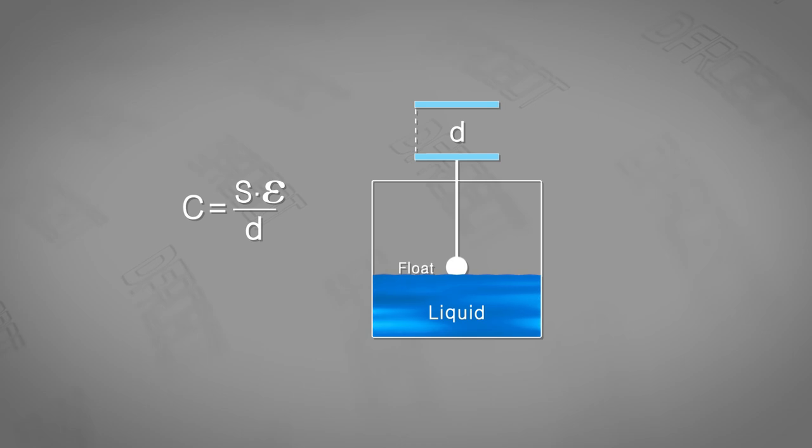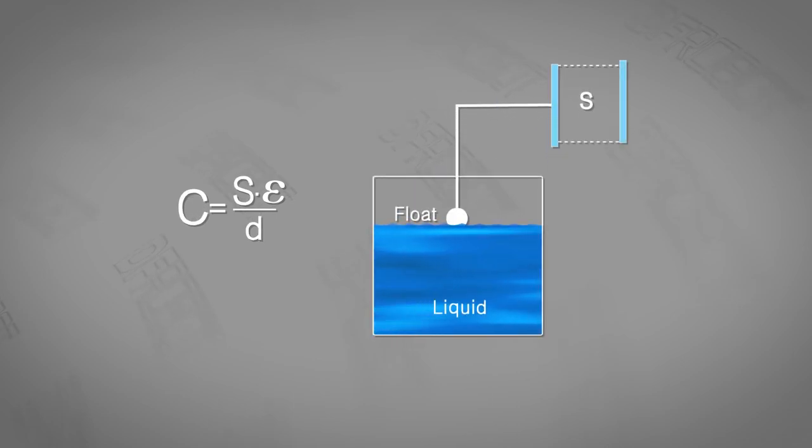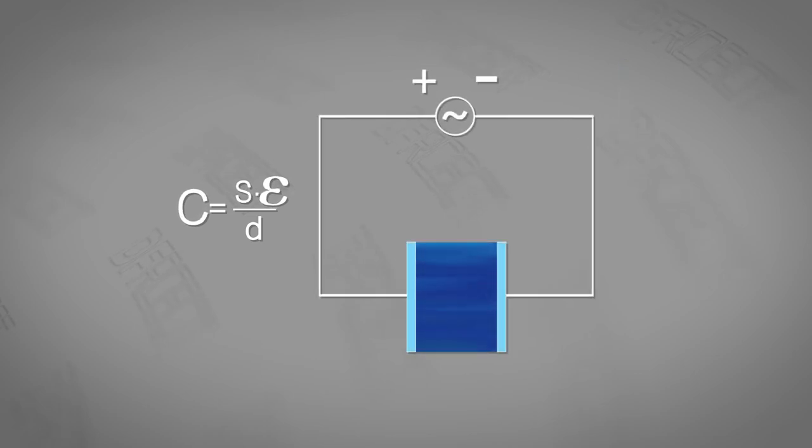For instance, when the liquid level rises or falls, there would be an alteration in the distance between the plates, the effective area of the plates, or the dielectric medium.